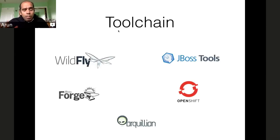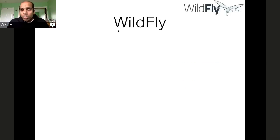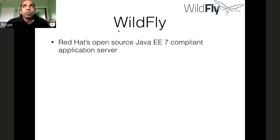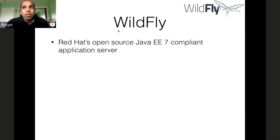Wildfly is Red Hat's open source Java EE 7 compliant application server. There is a reference implementation GlassFish, but there is no commercial support on it by Oracle. Wildfly is your good choice because today you can start building applications on Wildfly, and when JBoss EAP becomes available, you just seamlessly migrate — the code is 99% the same. Start with Wildfly today and jump over to JBoss EAP when commercial support is available.